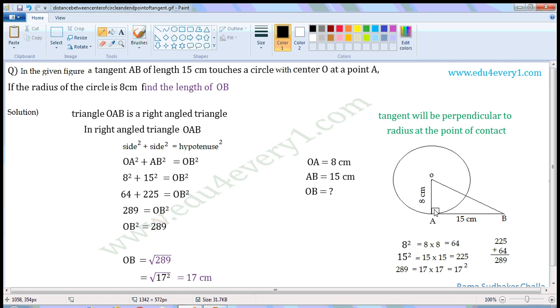Now, as angle A is 90 degrees, triangle OAB will be a right-angled triangle. Now, we have to find the length of OB.